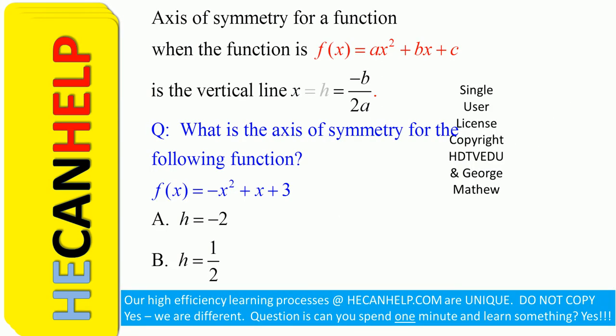Welcome! Axis of symmetry for a function when the function is f(x) = ax² + bx + c is the vertical line x = h = -b/(2a).